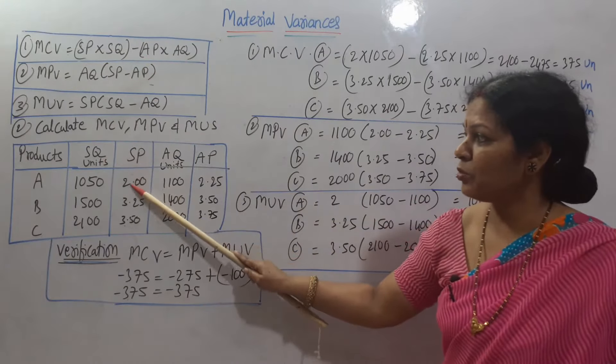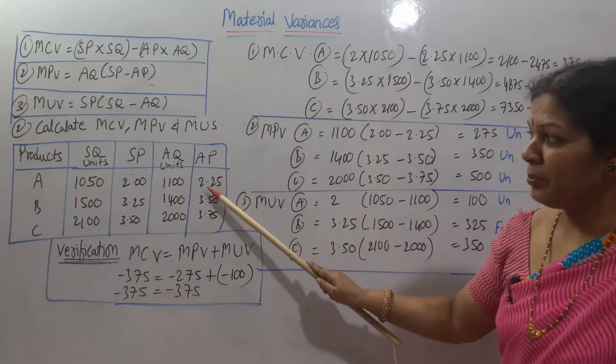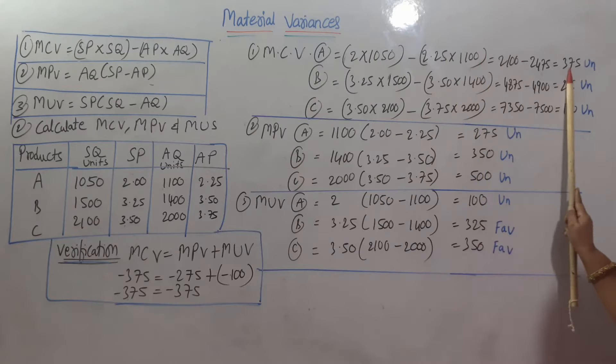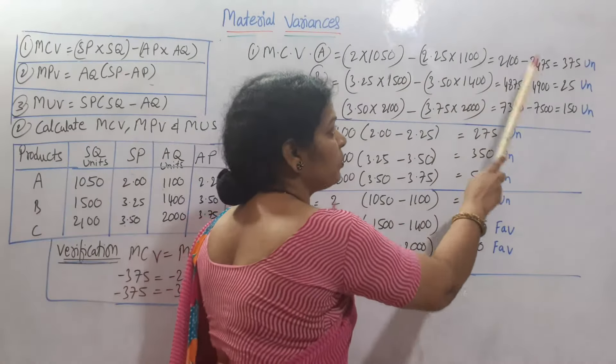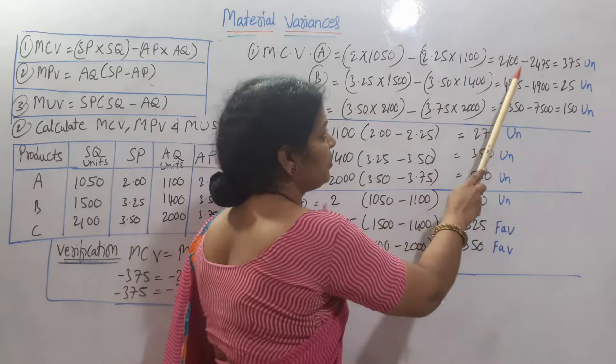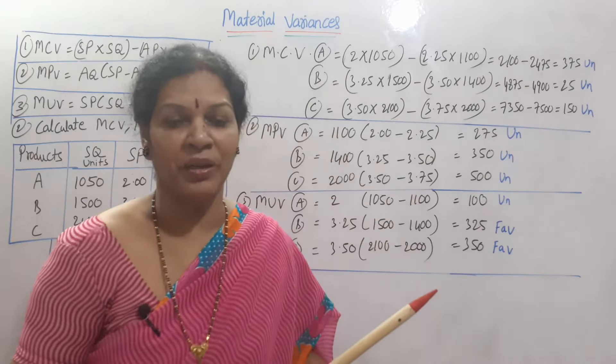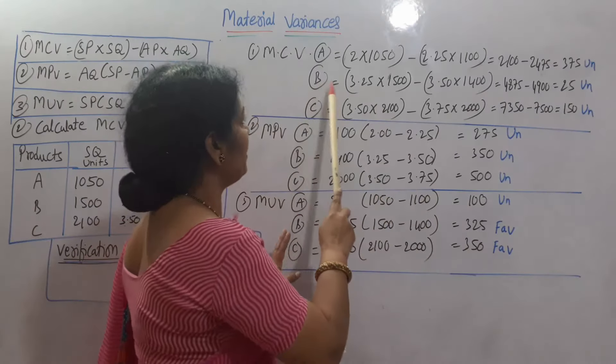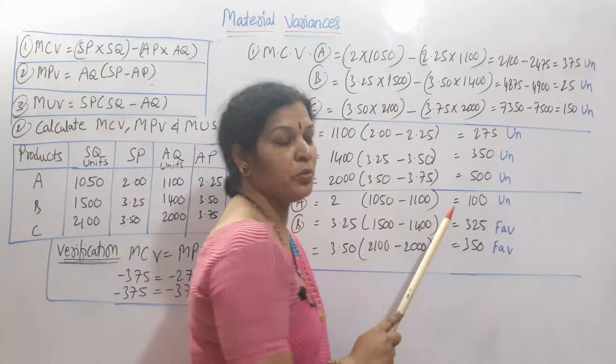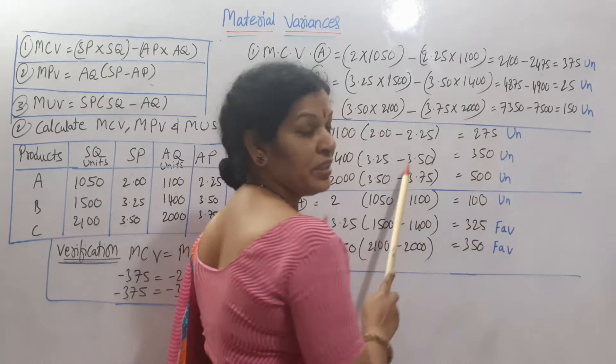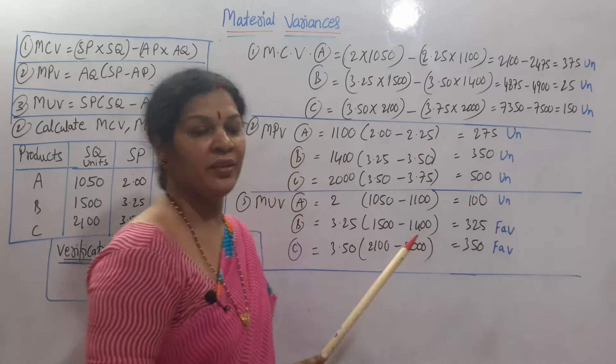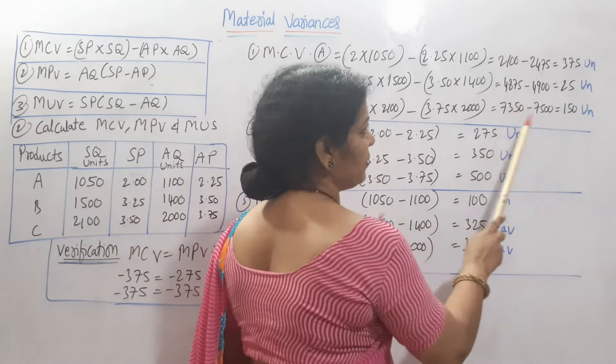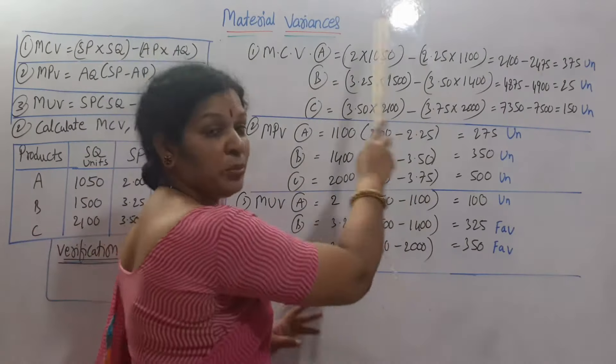SP into SQ. SP is 2 rupees, 1050. Minus AP into AQ, 2.25 into 1100. If you do the calculations, you got it 375. 2100 minus 2475. If you see, minus value I am getting. 375 is minus value. Minus means unfavorable. In the same way for B, 25 is also unfavorable. Because 4900 is here and 4875. In the same way for product C, this is 7,350 and 7,500, also unfavorable 150. This is about material cost variance.